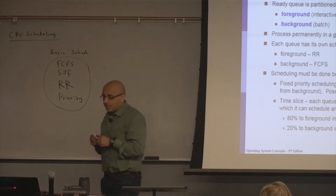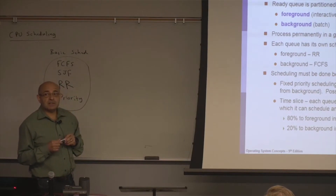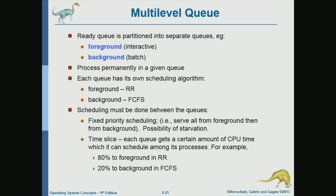With this multi-level queue scheme, priorities are fixed. Once a process has high priority it will stay high priority forever, and once a process has low priority that will stay forever. This is unrealistic. Real operating systems implement the next algorithm, which is multi-level but with feedback, where priorities change.